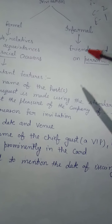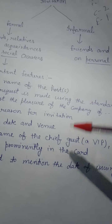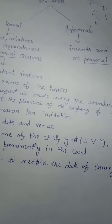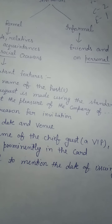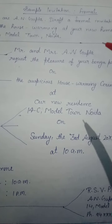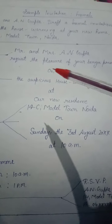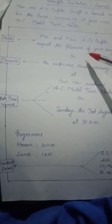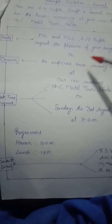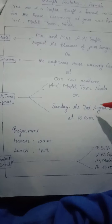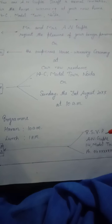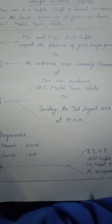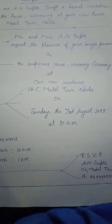Then invitation — we have discussed invitation before. There are two types: formal and informal. For formal invitation, you have to write in this way: first the host, then occasion, then date and time, and then contact details. This is how you write a formal invitation.